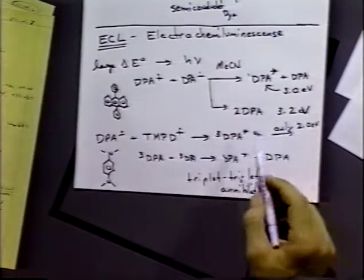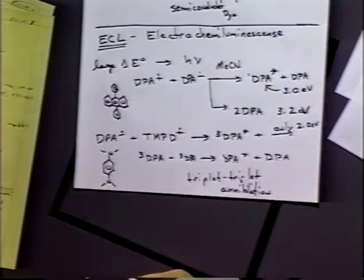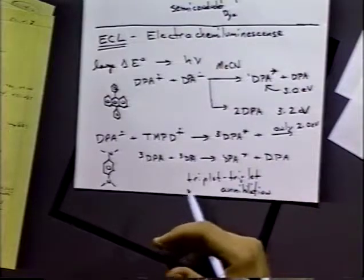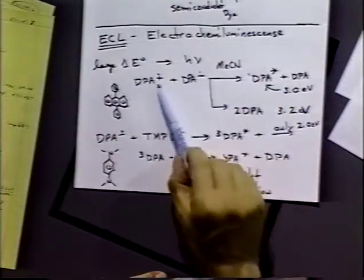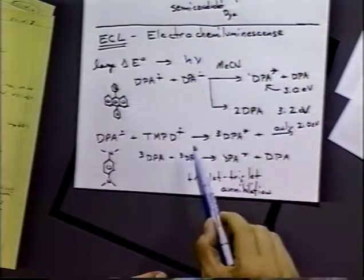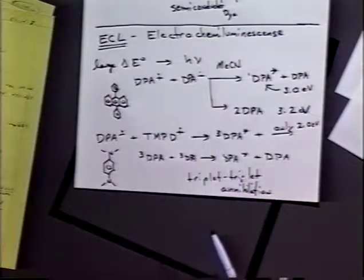Since the energy to form the triplet is insufficient to produce light, the triplet can either decay slowly to the ground state via a forbidden process, or those triplets can react in solution to produce a singlet state and a ground state DPA. The light you get out is the same frequency — excited state DPA decaying back to the ground state. The kinetics are different, though: light production is second order in DPA, so changing concentrations will change the kinetics, because the triplet species must react with itself.